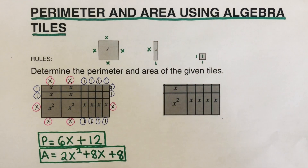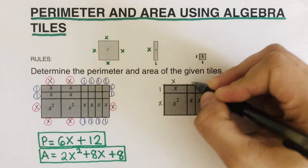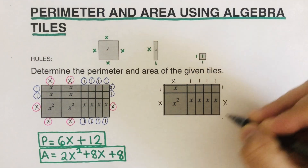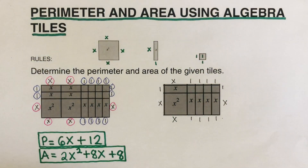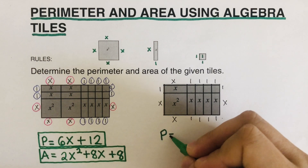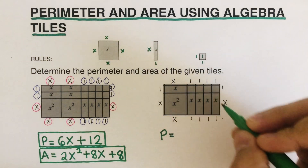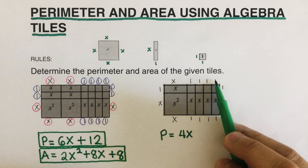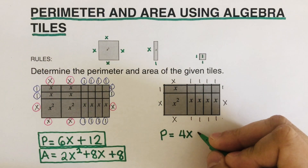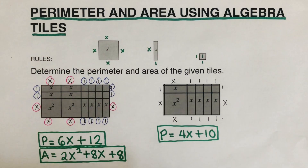Let's go over this. Label the parts first: this is x, this is 1, this is x, these are all ones, that's 1 and x, and this is 1, 1, 1, and 1, and this is an x. To find the perimeter, count all the x's — that's four x — then count the ones: one through ten — so 4x + 10.